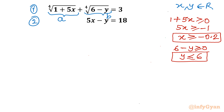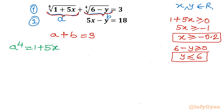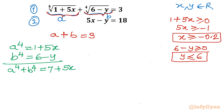Now let's frame equations using the substitutions. With the first fourth root as a and the second as b, equation 1 becomes a + b = 3. I will also frame another equation by taking the fourth power: a⁴ = 1 + 5x and b⁴ = 6 - y. Adding both gives a⁴ + b⁴ = 7 + 5x - y. And since from equation 2 of the system, 5x - y = 18, this gives us 7 + 18 = 25.